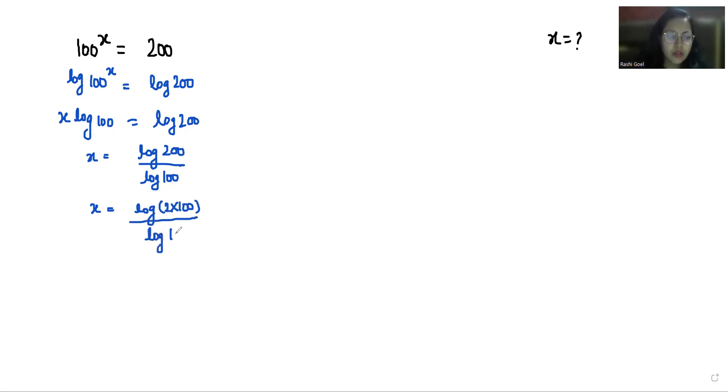By log 100, according to log rule log a times b we can write it as log a plus log b.